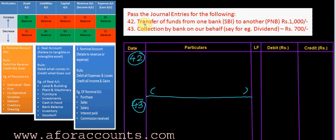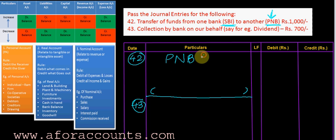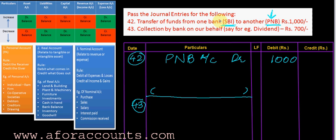Reading the entry again: transfer of funds from SBI — I am taking out the funds from SBI — to PNB, where I am putting the funds. So who is the receiver? Who is getting the money? Punjab National Bank. So PNB account debit by 1000. And who is the giver? The giver is the SBI account.